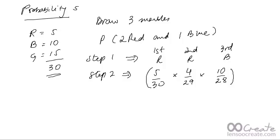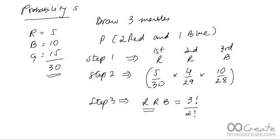This is the probability of getting exactly two red and one blue in the order: first red, second red, third blue. Step three is to multiply the answer of step two with the number of arrangements possible of the outcome R R B. The number of arrangements is 3 factorial divided by 2 factorial—because two letters are the same—which gives 3. So we multiply the answer of step two by 3 to get the final answer.